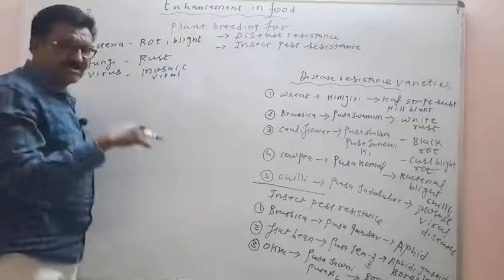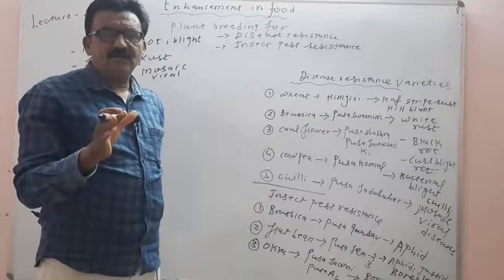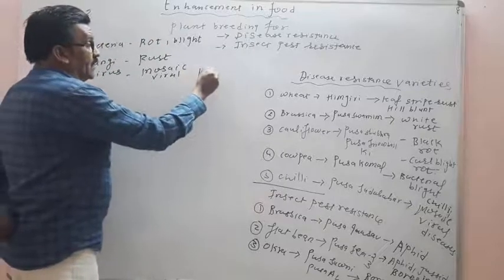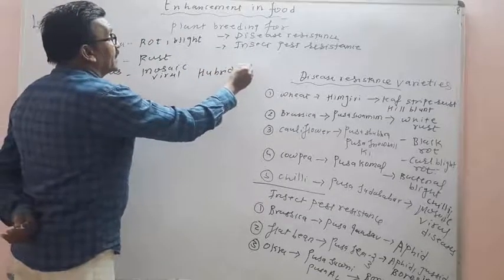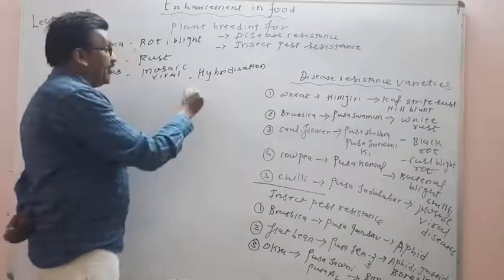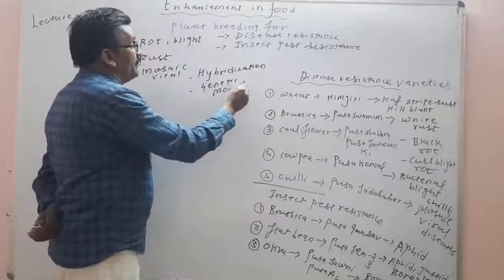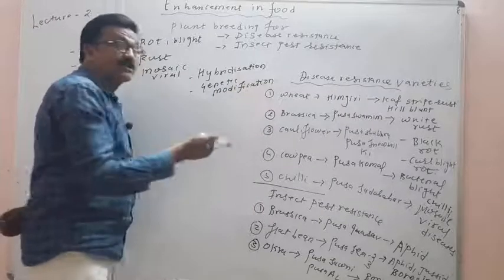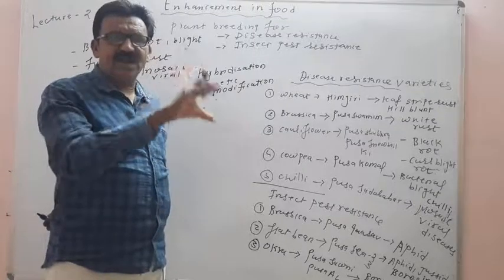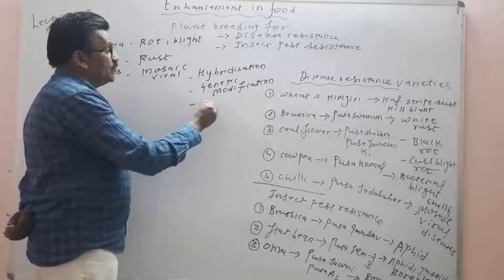All these diseases are controlled by hybridization method. Hybridization is the best way to control these diseases, along with genetic modification. Genetic modification is the best way to control these diseases. These diseases can also be prevented by using mutation.